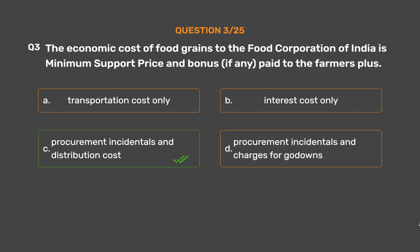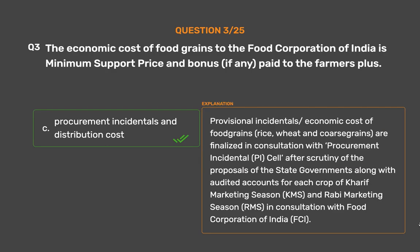The correct answer is Option C: Procurement Incidentals and Distribution Cost. Provisional Incidentals and Economic Cost of Food Grains — rice, wheat, and coarse grains — are finalized in consultation with state governments along with audited accounts for each crop of Kharif Marketing Season (KMS) and Rabi Marketing Season (RMS), in consultation with the Food Corporation of India (FCI).